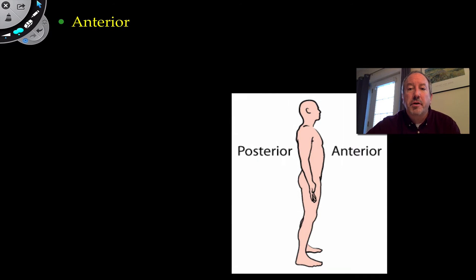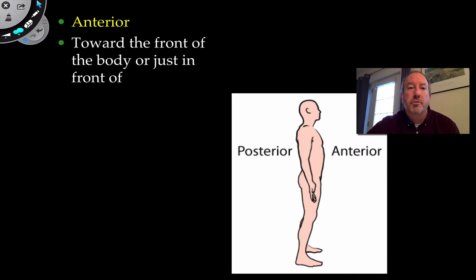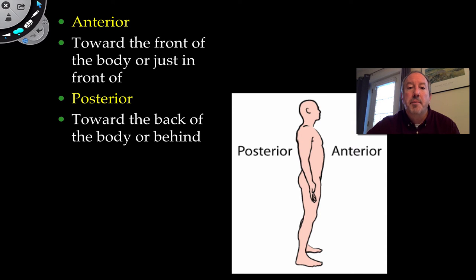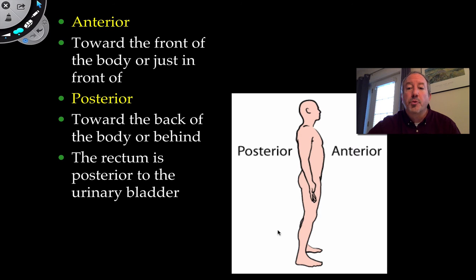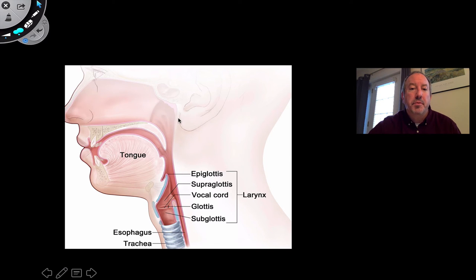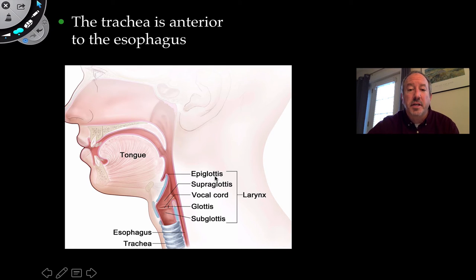We also have the terms anterior — toward the front of the body — and posterior — toward the back. I remember posterior because it sounds like 'posture,' which relates to your back. For example, your rectum connecting to the anus is posterior to the urinary bladder, which is anterior. Similarly, the trachea is anterior to the esophagus, which is part of the alimentary canal where food travels down.